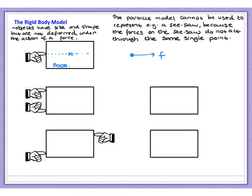Let's look at a second scenario. Again, we have a book on a table. Here's the centre of mass, marked with a cross. But this time, we have two places in which the book is being pushed - a pushing force F here and a pushing force F here - equal forces being applied symmetrically. Because the two forces are in the same direction, of the same magnitude, and are being applied symmetrically, the particle model is still adequate. The book will move forward along the table under the action of a resultant force of 2F.